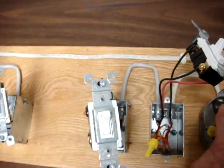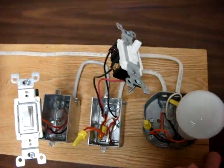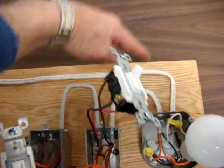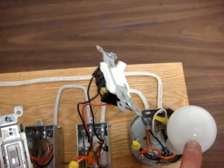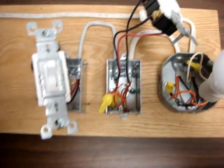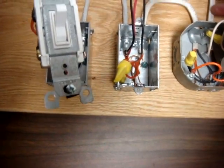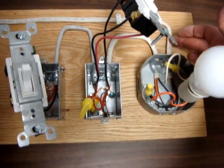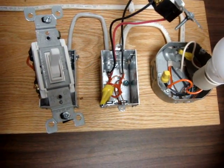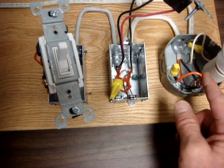In this particular case, this happens to be the power coming in to the light, and then from the light to the other two switches. And in this particular case, the white wire that comes in from the power source just goes to the light fixture, and from the light fixture, the white wire is re-identified as orange.